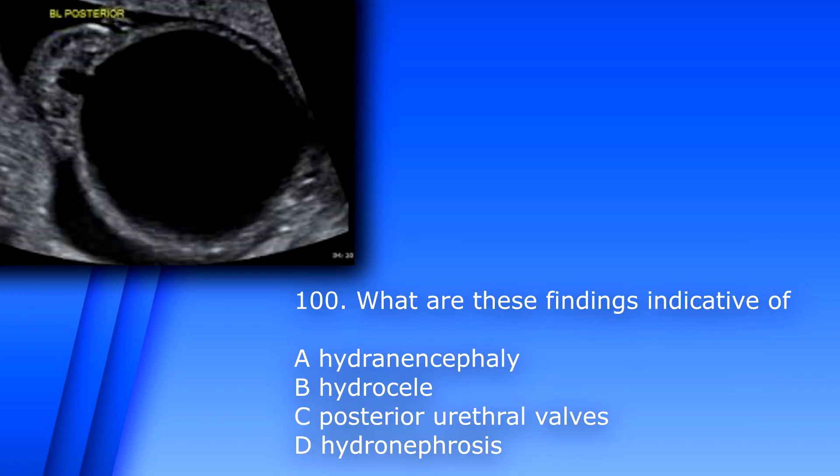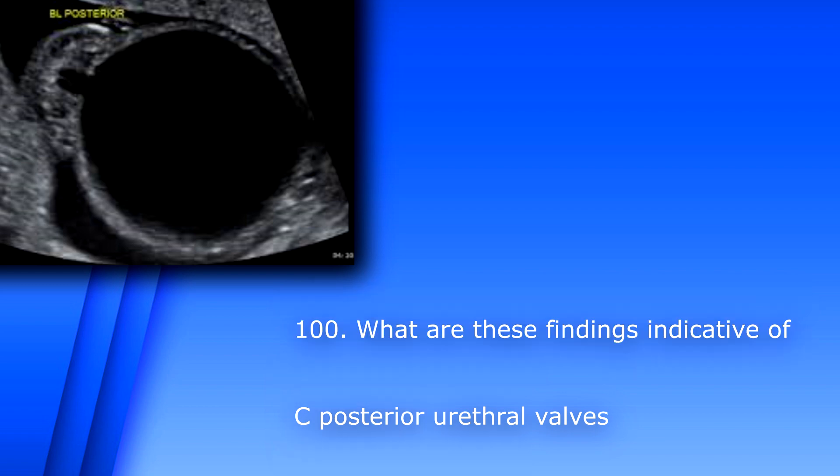Question 100. What are these findings indicative of? A. Hydranencephaly. B. Hydrocele. C. Posterior urethral valves. D. Hydronephrosis. The answer is C, posterior urethral valves. This is the keyhole sign of the bladder.